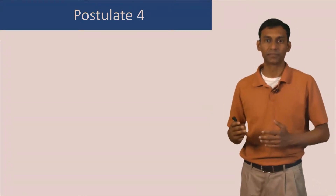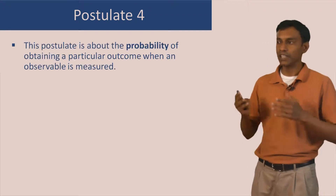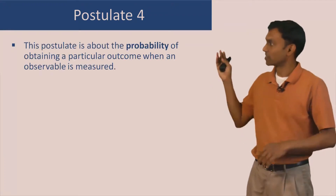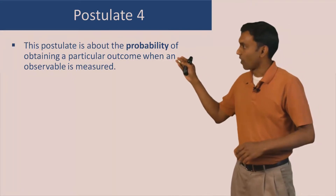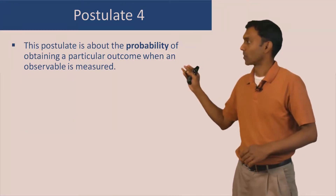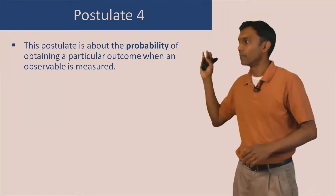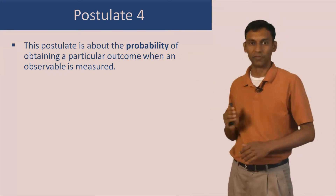In postulate 3, we saw that when we make a measurement of an observable quantity in quantum mechanics on a quantum system, the only outcomes that you get are eigenvalues of the operator corresponding to the observable that you are measuring. Now, postulate 4 tells us what the probability is of obtaining a particular outcome or a particular eigenvalue when you make a measurement of an observable.